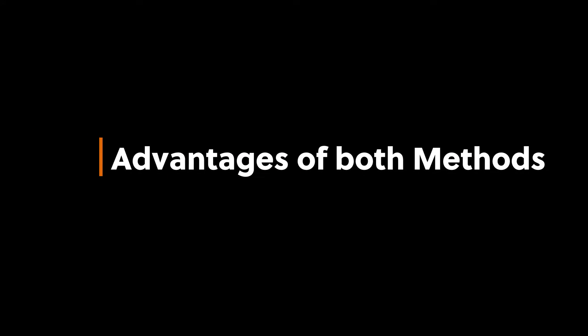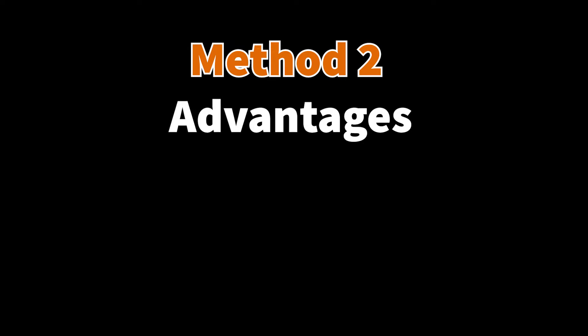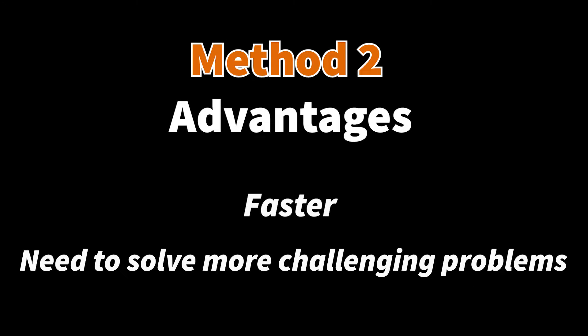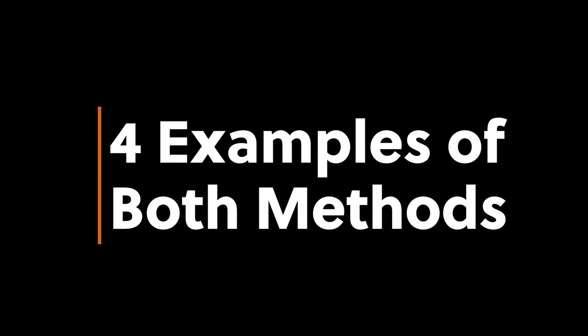Both methods have advantages. Method 1's main advantage is it makes it easy to find the amount of the discount. Method 2 has two advantages: it's faster to find the total, and it helps with more complicated problems — like when we know the sale price and the percent of the sale and need to work backwards to find the original price. Now let's do four different examples using both methods.